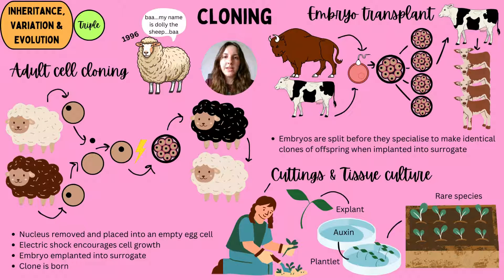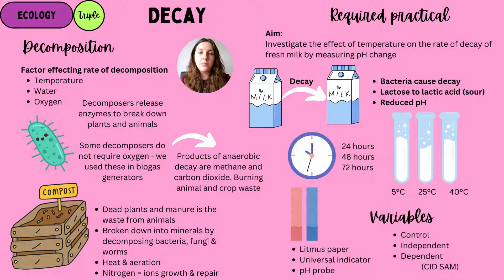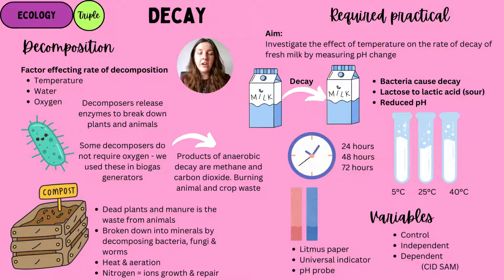If you're a triple scientist, you need to know about decay. Factors that increase the rate of decomposition include temperature, moisture, and oxygen. Decomposers such as bacteria, fungi, and worms break down plant and animal tissue. These organisms can also work without oxygen — anaerobic decay is used in biogas generators, producing methane and carbon dioxide. Burning animal and crop waste generates useful fuel energy. Decomposition also occurs in compost heaps, which have aerated, warm soil that encourages the decomposition process.